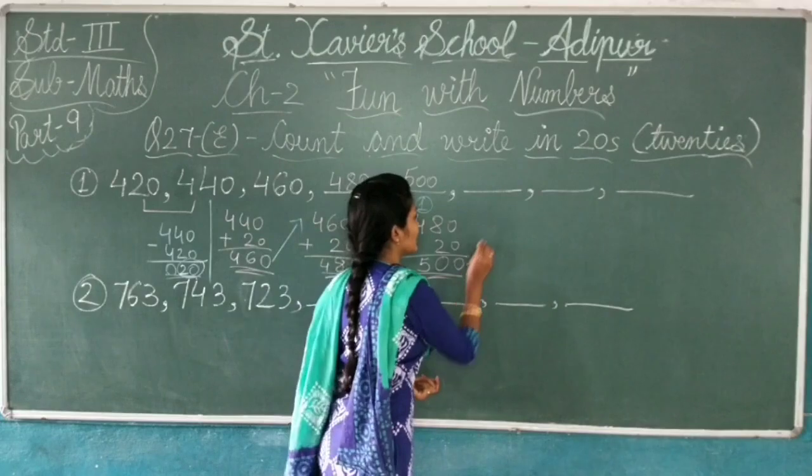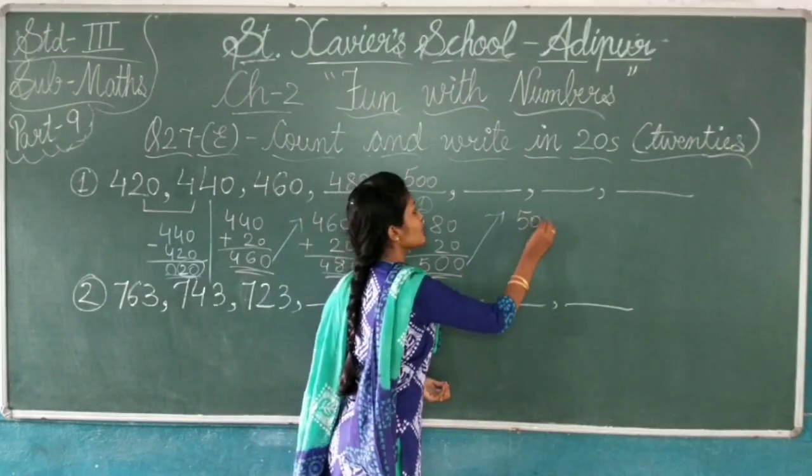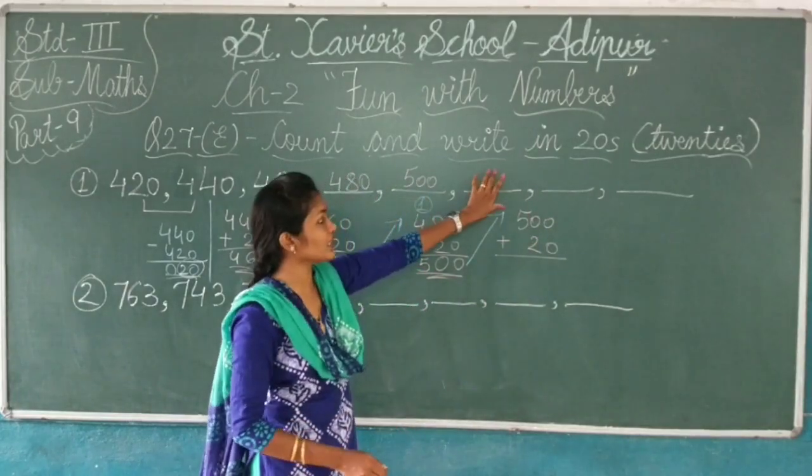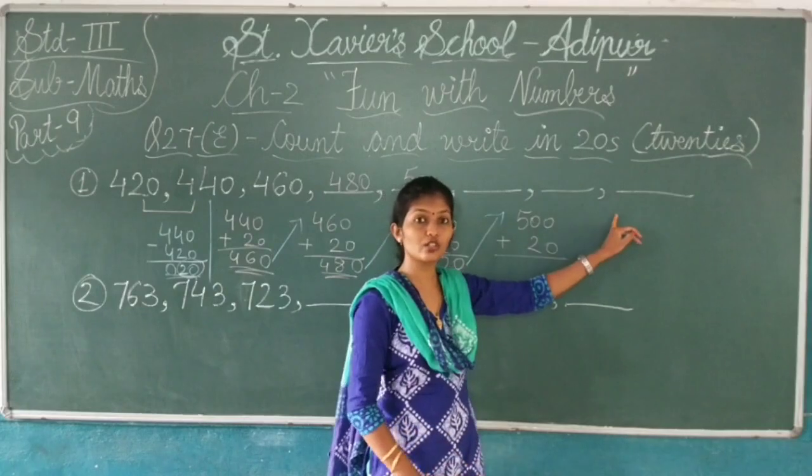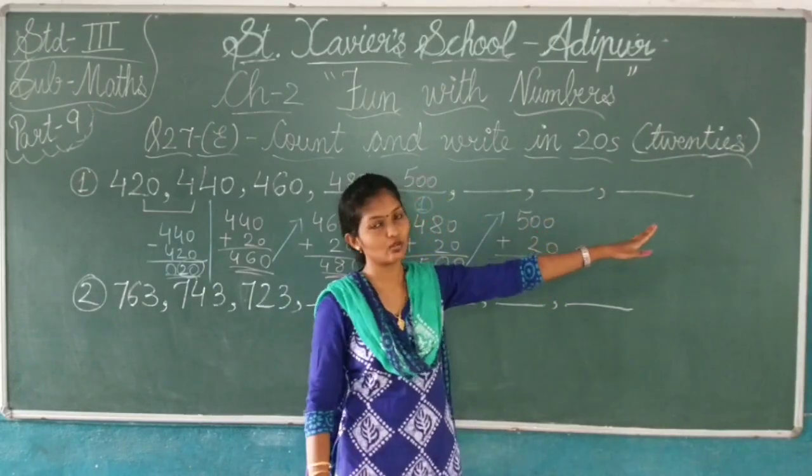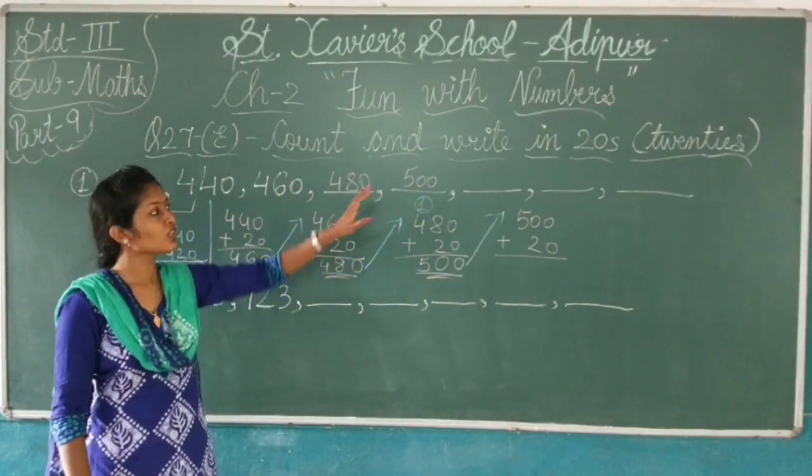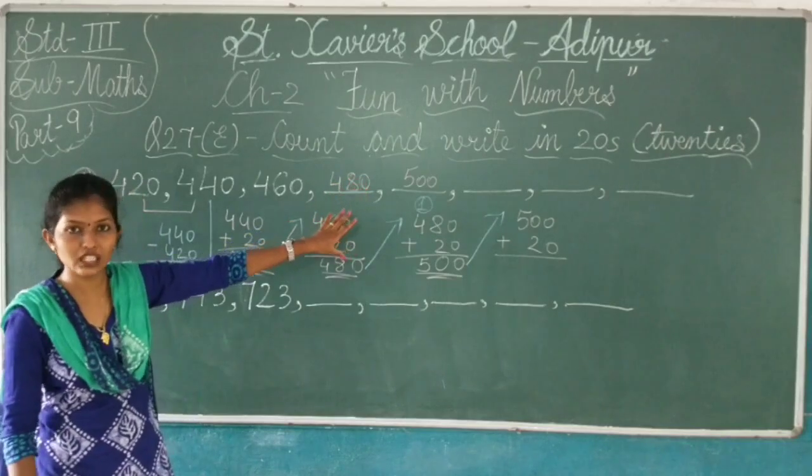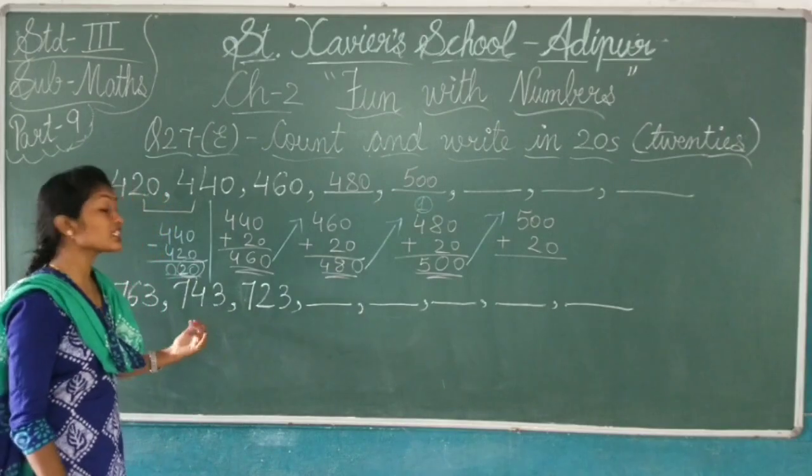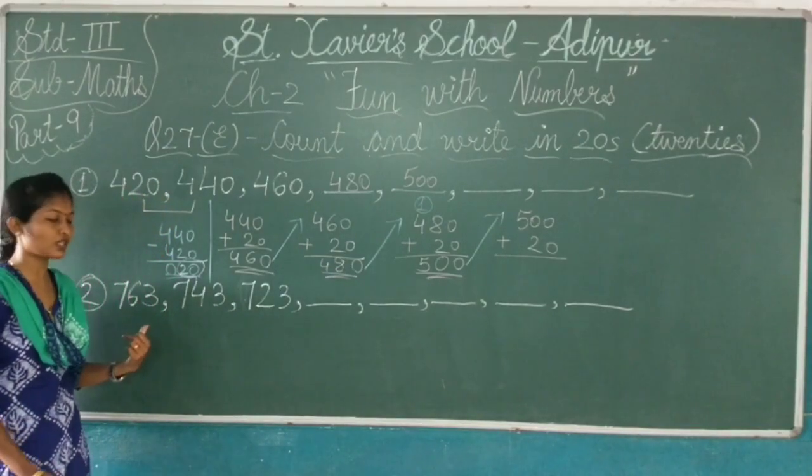Now the same way, you will take this 500 up. You will write here 500 plus 20. I will show the PDF so you can check it. So this was the example of increasing order. Now let's see the example of decreasing order.